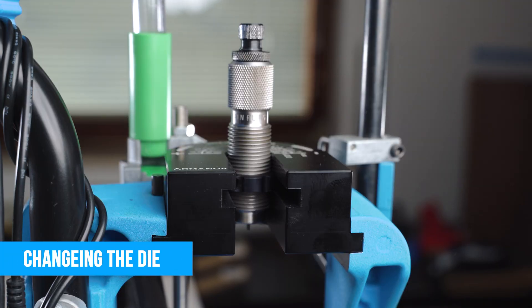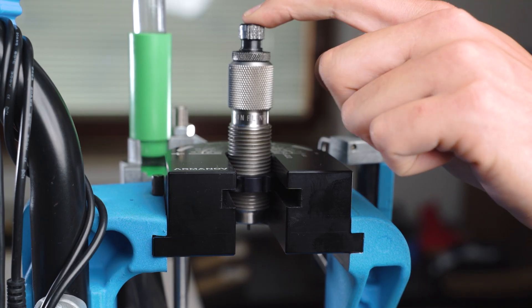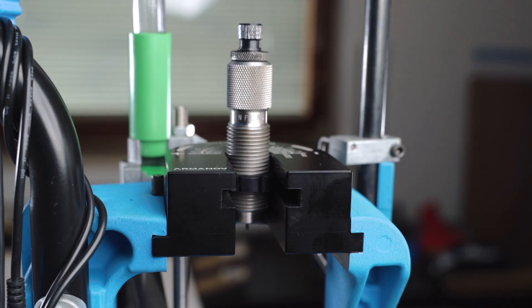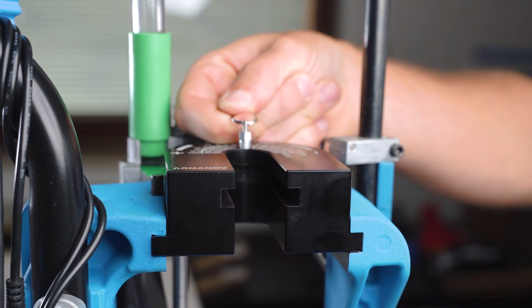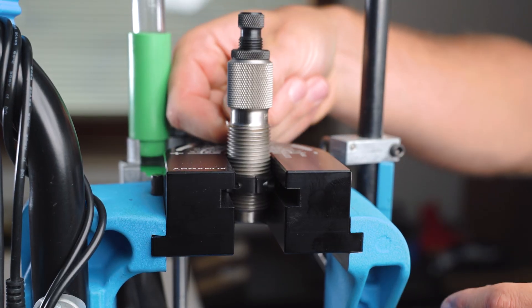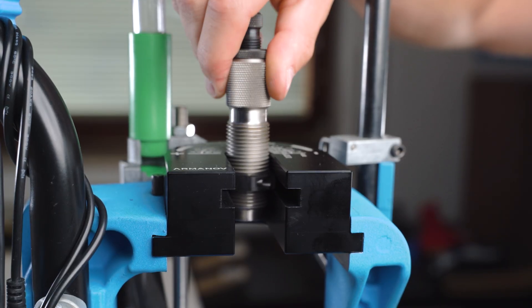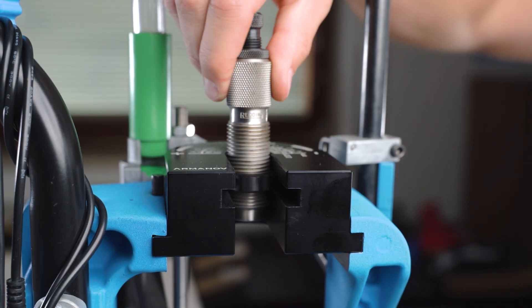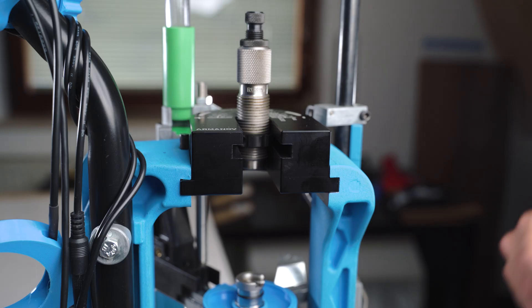To show you how fast and simple die changes on the single stage conversion really are, I will change the decapping die into a bullet seating die simply by pulling the spring-loaded plunger and then by moving the new die inside, I can pull up the plunger, push it till it sits, and just turn it a little bit until the plunger sits in the hole and the die is now in place. Super simple.